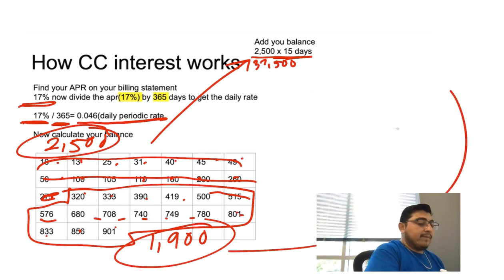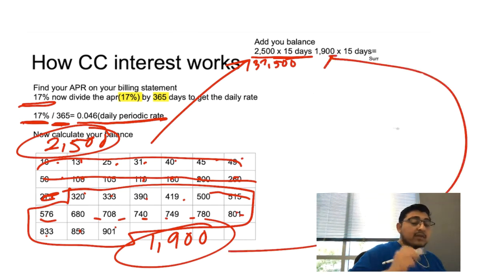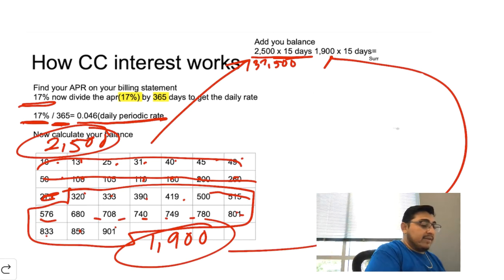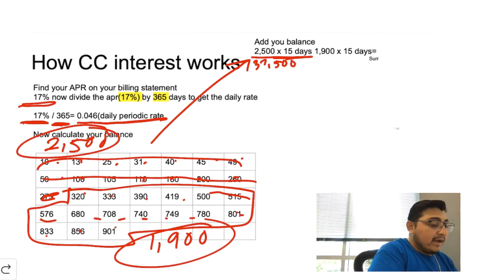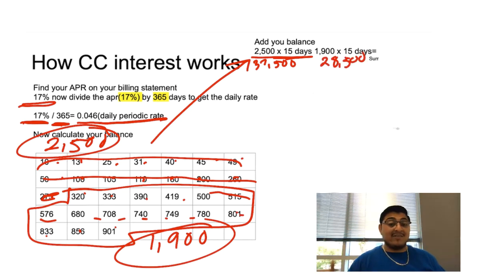Now we're going to multiply $1,900 by 15, which is going to give us a total of $28,500. I know these numbers might seem a little bit scary and a little bit overwhelming, but I promise you this is going to make a lot of sense.